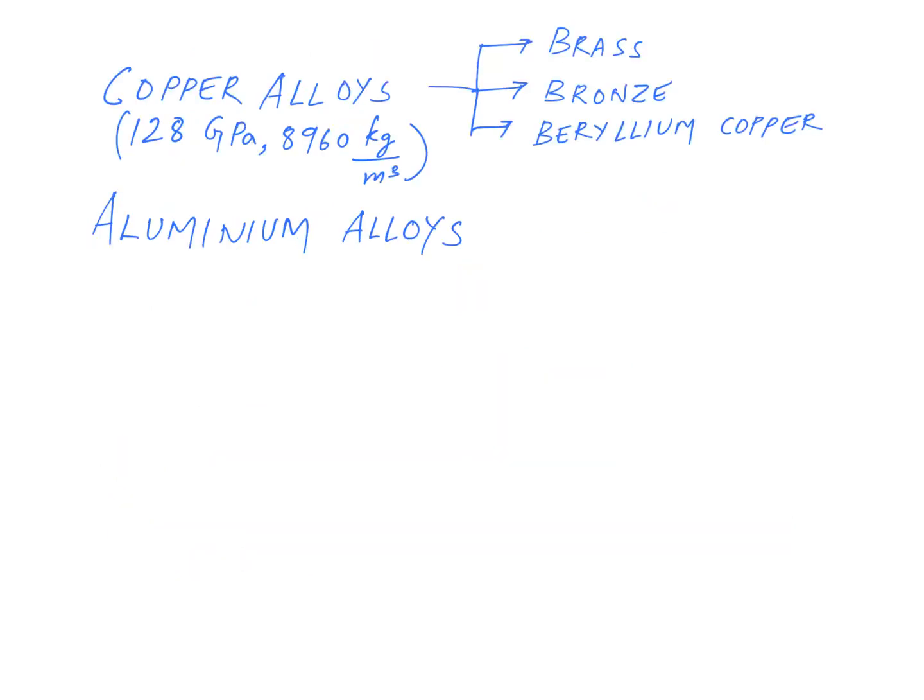A couple more things about copper alloys: the Young's modulus of copper alloys is typically around 128 GPa and its density is 8960 kg/m³. This is not as light as some other metals like aluminum. Let's go ahead and talk about aluminum alloys.